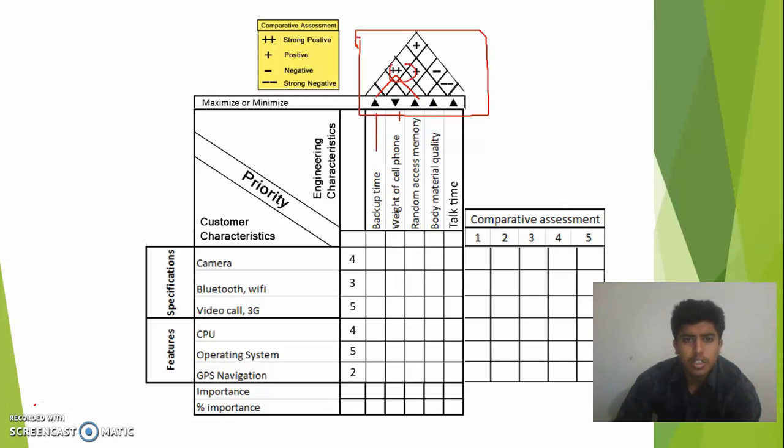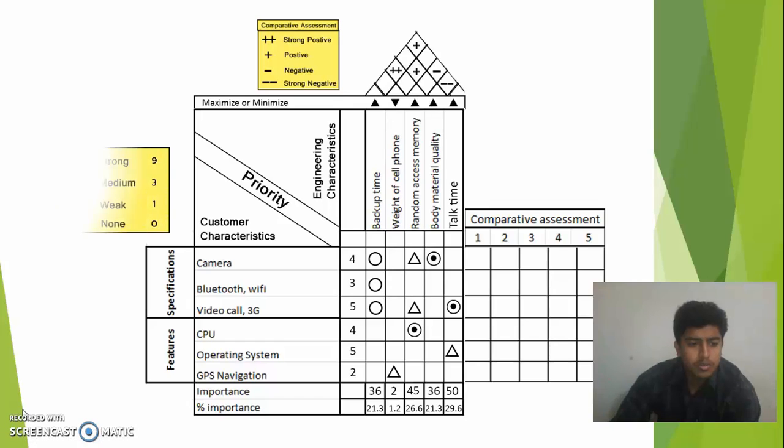That means that the double positive sign will denote the strong positive correlation. Plus sign will denote the positive relationship. Minus will denote the negative relationship, and double negative will denote the strong negative relationship. So the talk time and the body material quality has a very strong negative correlation. So now moving on, now we're going to find the relationship between these customer characteristics and the engineering characteristics.